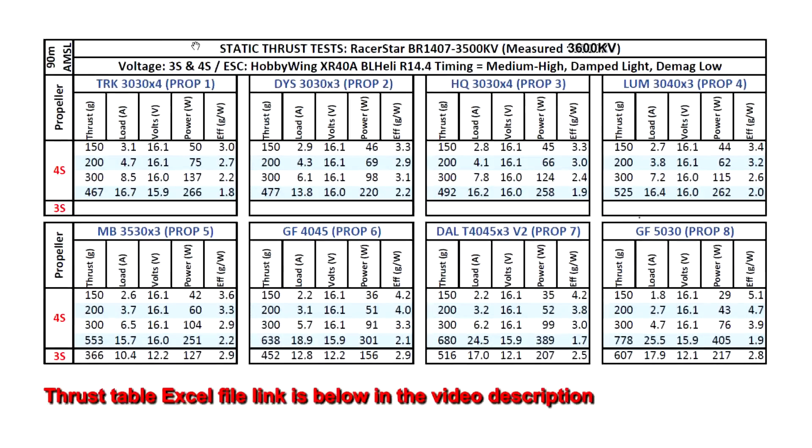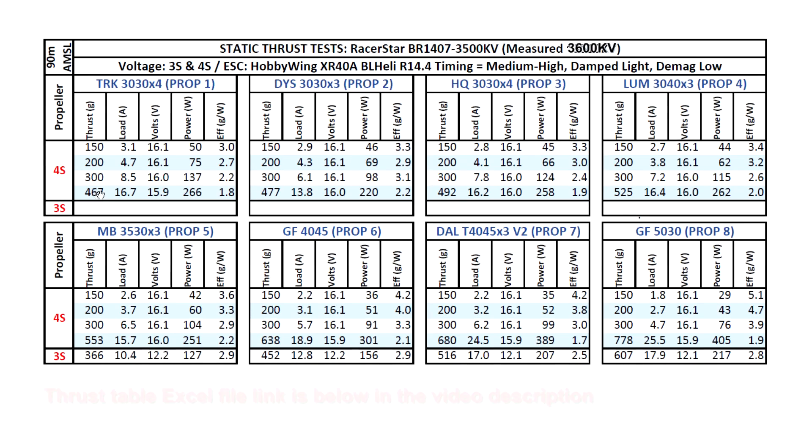Here are the thrust results. Thrust numbers are a little bit on the low side. The motor doesn't even break 500 grams on this first group of props. And on the Lumineer 3040x3, which is a prop that all the other 1407 motors get very close to or break the 600 gram mark, this one's only doing about 525 grams.